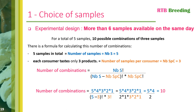Now that we have the formula, we can apply it to the example: we have 5 samples in total and each consumer tastes 3 samples. The number of combinations is therefore equal to the factorial of 5 divided by the factorial of (5 minus 3) multiplied by the factorial of 3. By doing this calculation, we find 10 combinations, which is the same result as counted previously.